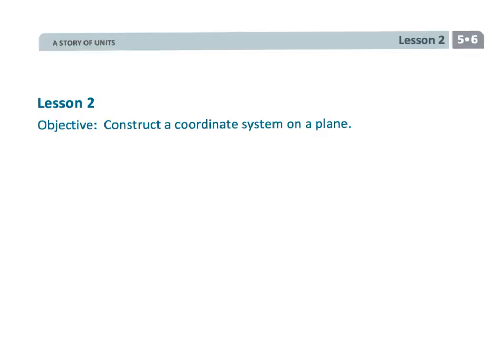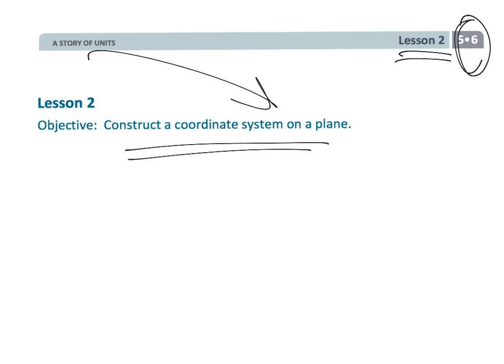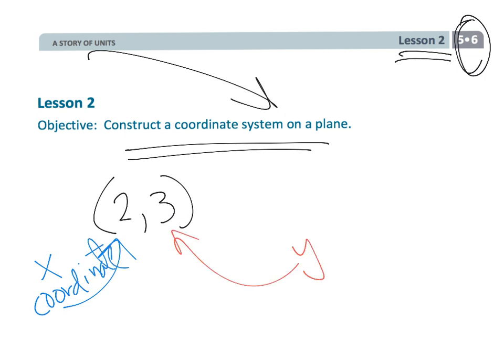And that wraps up kind of a fun one. Fifth grade, module six, lesson two. We're beginning to learn how to locate points on a coordinate plane. Essentially, we're learning that that ordered pair tells you that the two is where it is on the x-coordinate, and the three is telling you the y-coordinate.